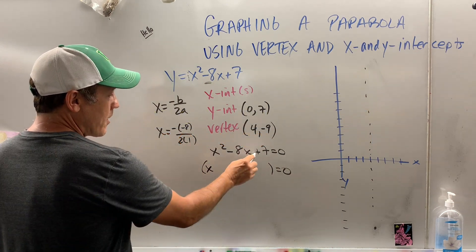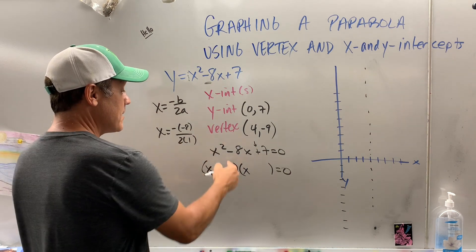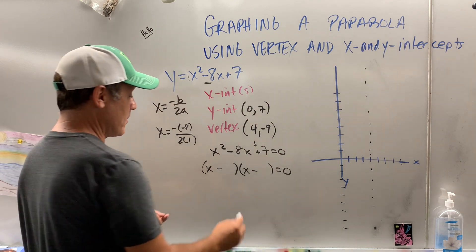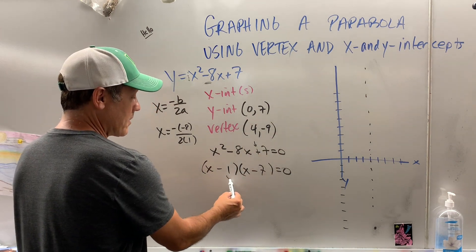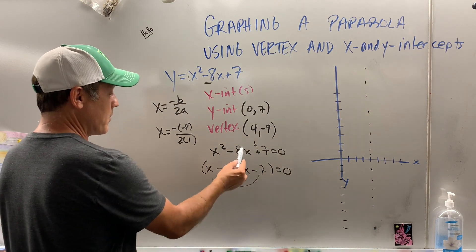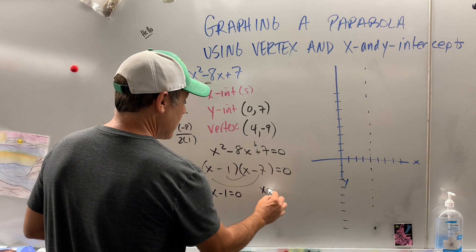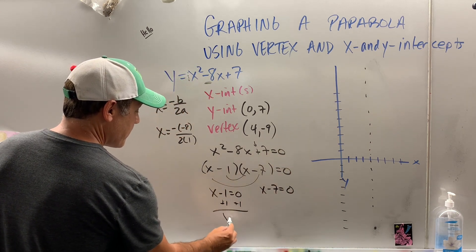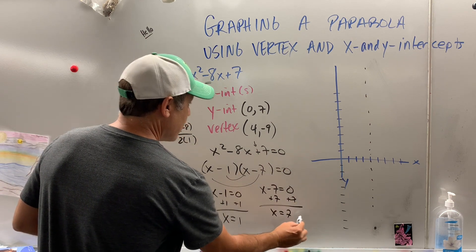x, x. What are my signs? What times what gives you a plus? Plus, plus, minus, minus. Since that's a minus, I'm going with minus, minus. 7 only has two factors. Let's make sure, because sometimes it's not going to factor, actually. Negative 1x, take away 7, we hit the home run. So using that 0 product property, you pick each factor up, add 1 to both sides, x equals 1, add 7 to both sides, x equals 7.